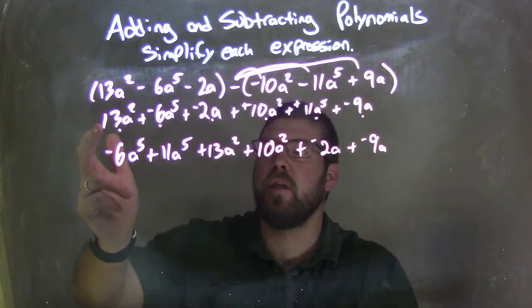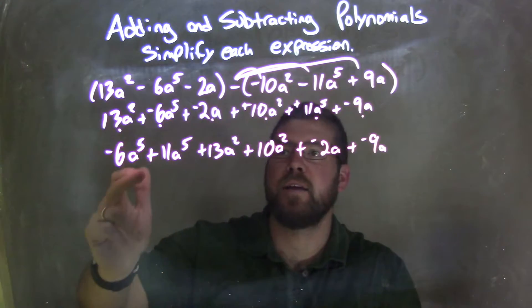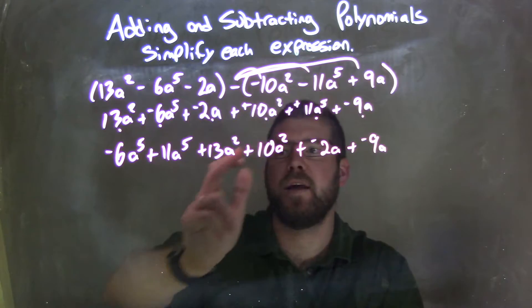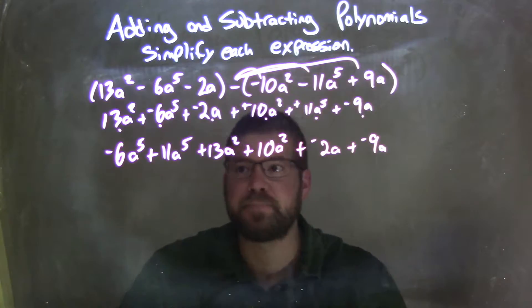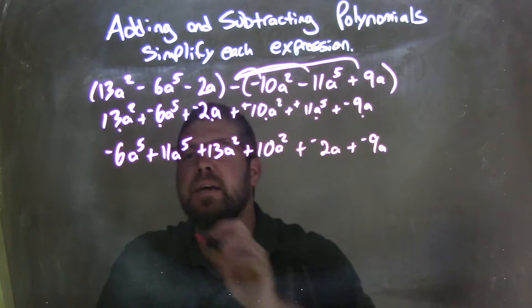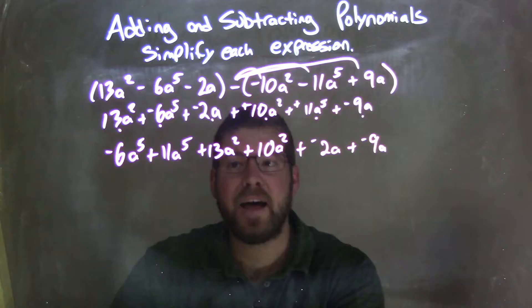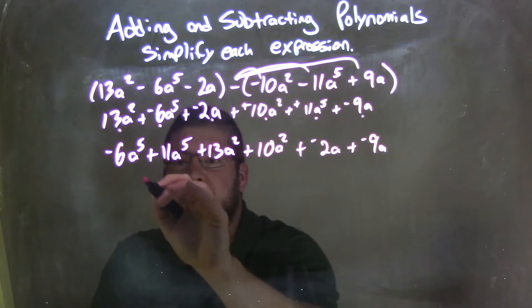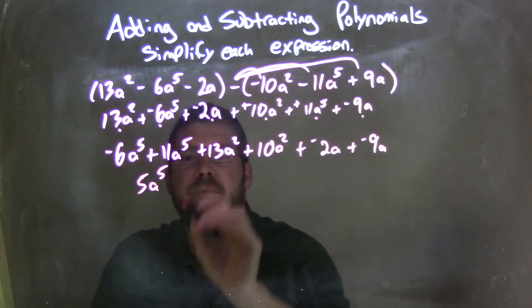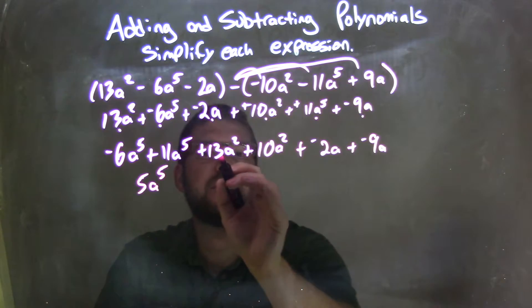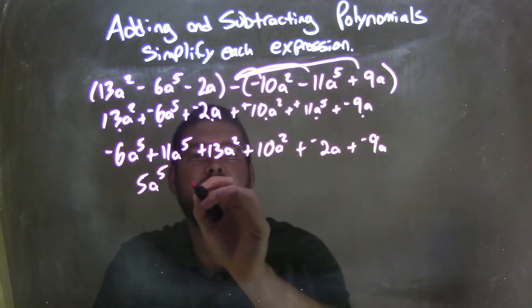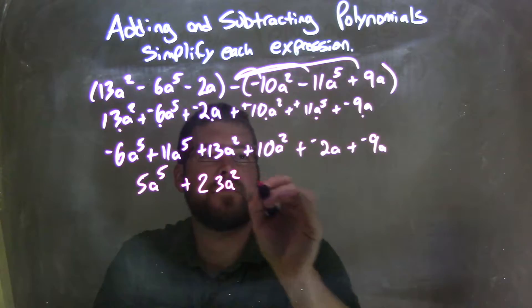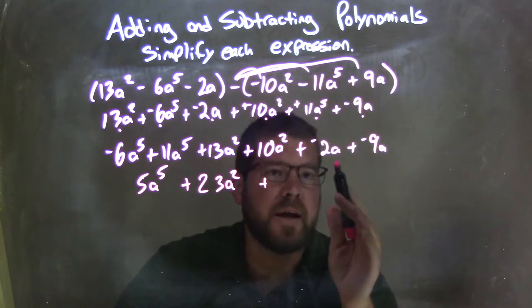Let's just double check to write everything down. 13a squared, negative 6a to the 5th, negative 2a, 10a squared, 11a to the 5th, and negative 9a. Good. We brought everything down. So now let's combine like terms. Negative 6a to the 5th plus 11a to the 5th is positive 5a to the 5th. 13a squared plus 10a squared is 23a squared. Lastly, negative 2a plus a negative 9a is a negative 11a.